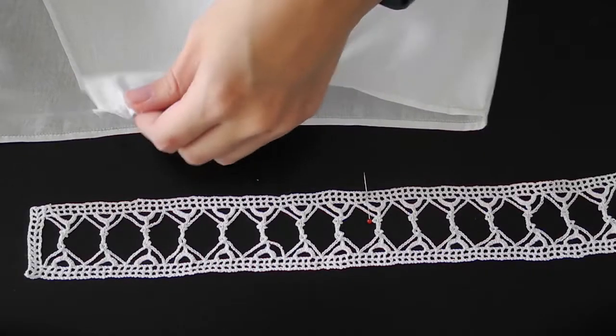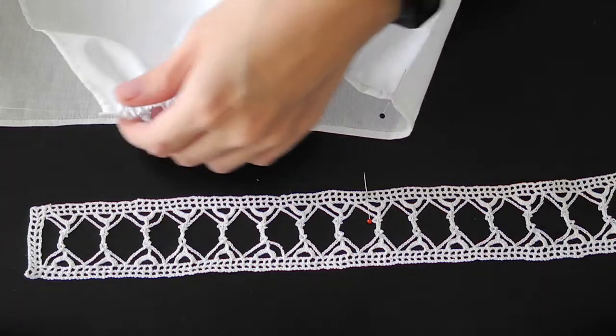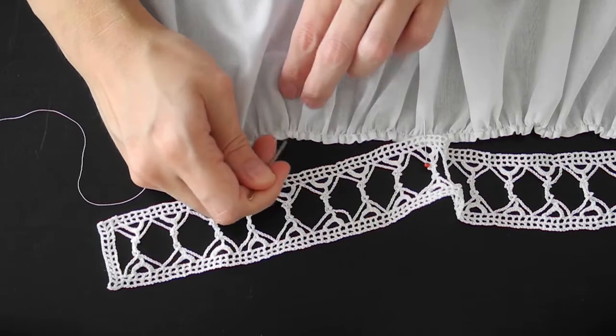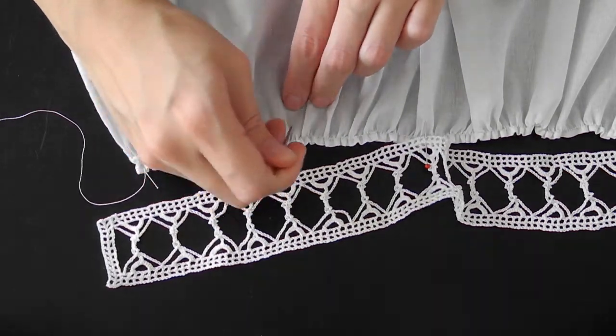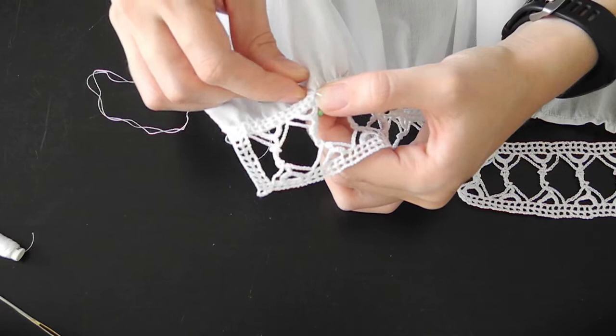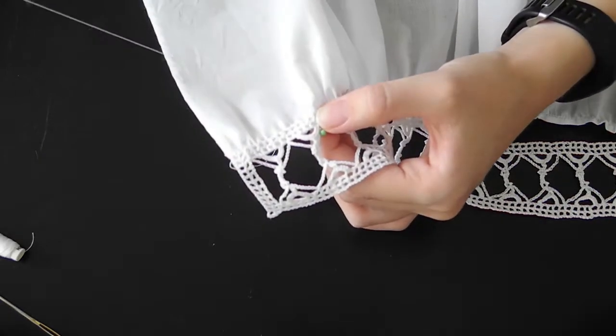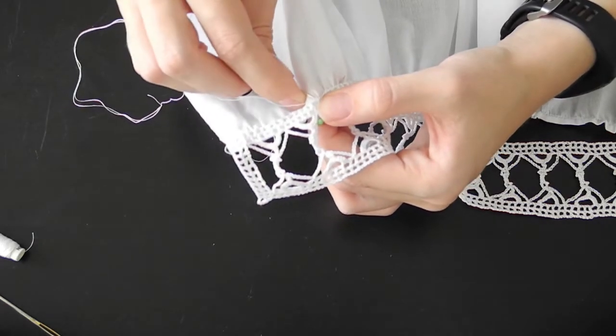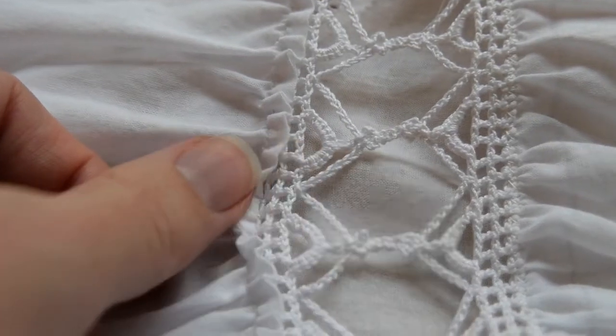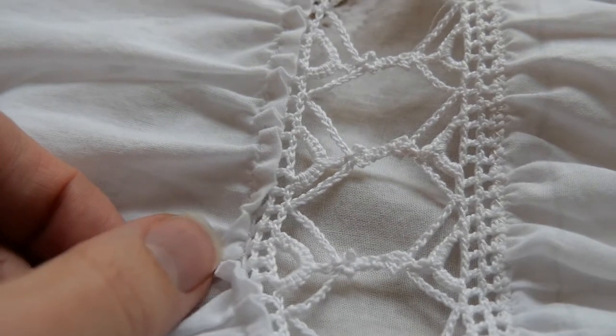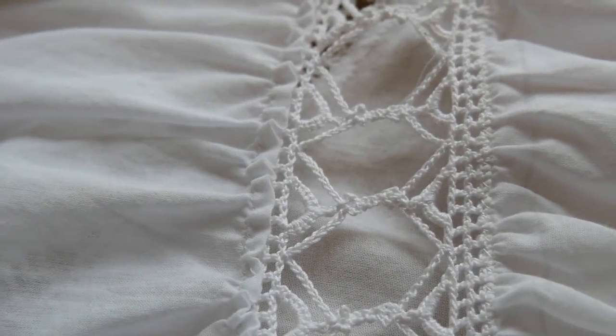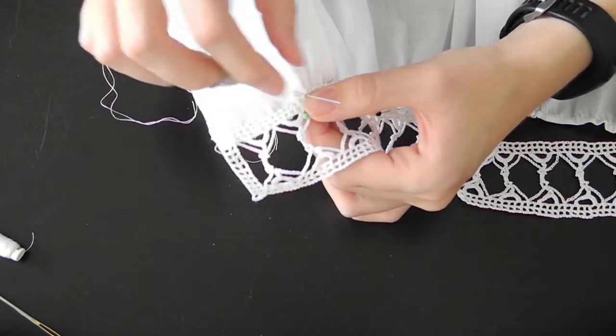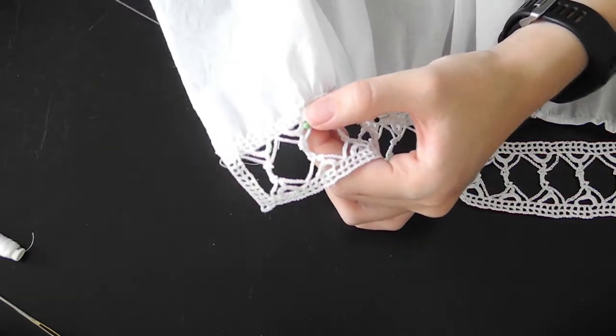Once the waistband was complete, I gathered the upper part of the legs and stroked those gatherings. Then I sewed it on with a whip stitch. Actually, I wasn't that happy with this method, since I ended up with that tiny hem standing upright behind the lace, instead of having a smooth intersection of the lace and the fabric. But at this point I wasn't willing to rip open the whole hem and instead decided to go on with it.